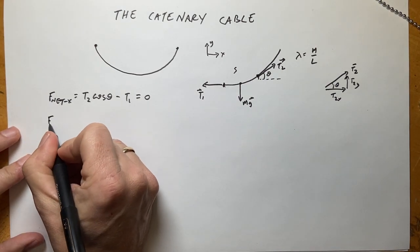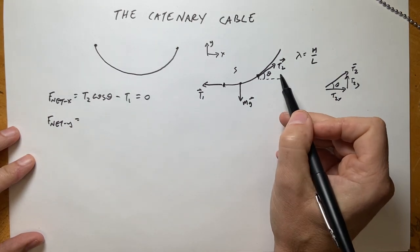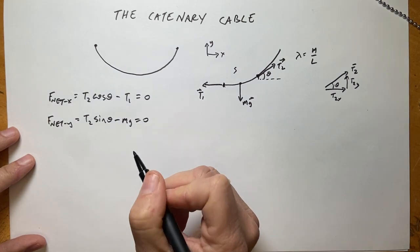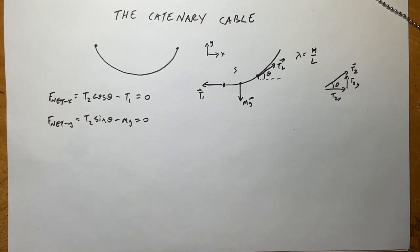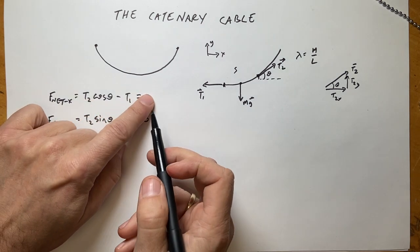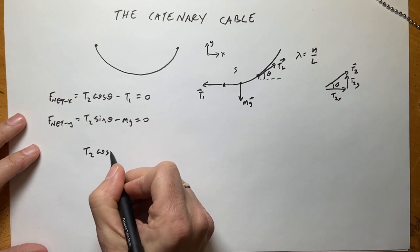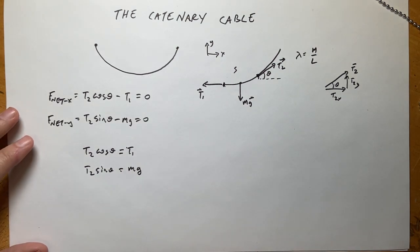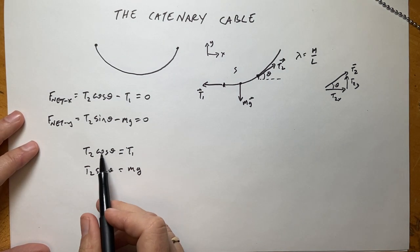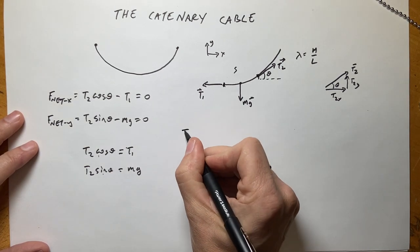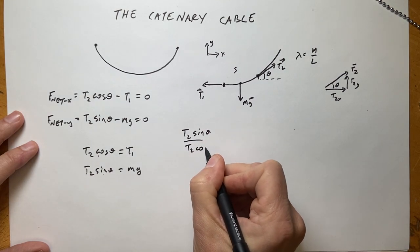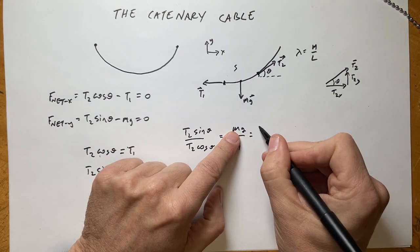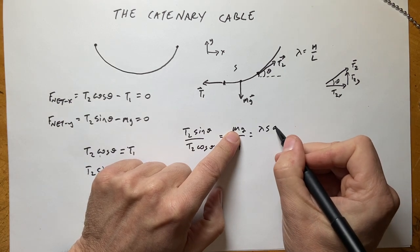Now the y-direction: F_net y is going to be equal to T2 sine theta — that is the vertical component — minus mg, which is in the y-direction, equals zero. So I have two equations. Rearranging: T2 cosine theta equals T1, and T2 sine theta equals mg. And technically, mg — the mass of this section — would be lambda times the length s times g over T1.